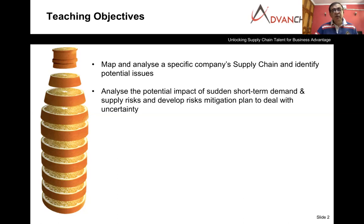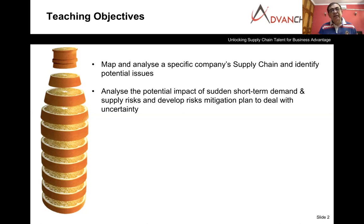The second objective is to understand what could be the possible short-term impact on demand. As we have seen in a COVID situation, demand for certain products may go down and demand for certain products may increase. We will see for this specific company what could be the possible impact on short-term demand, and also look at supply risks — what kind of risk the company is exposed to, and then what could be the possible risk mitigation plan.